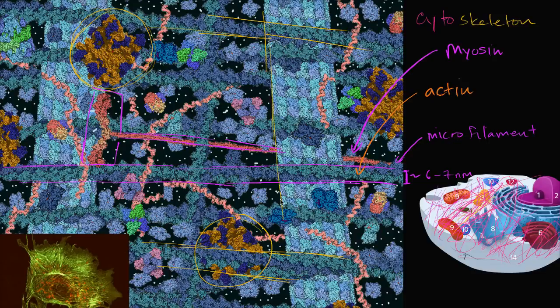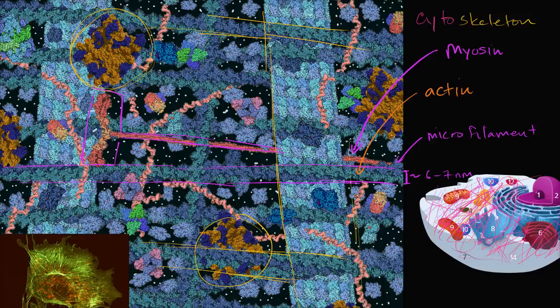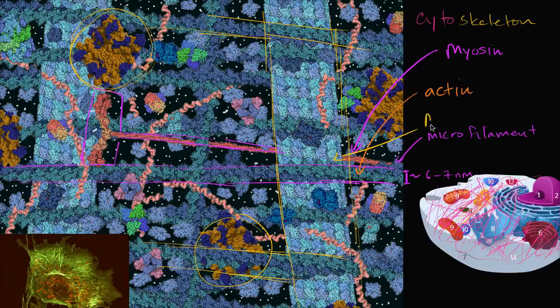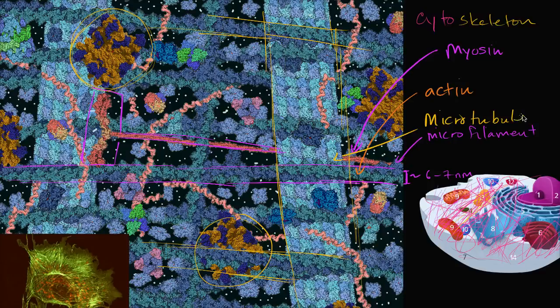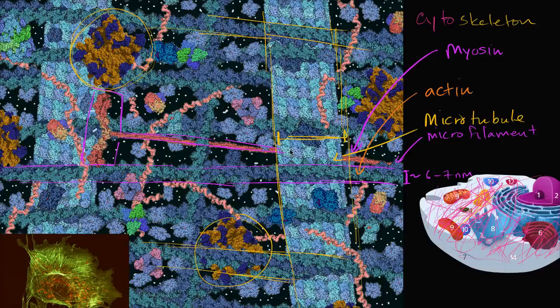So for example, what are these tube-like structures? Well, these are called microtubules. Microtubules. And they look massive compared to the microfilaments. But they're still fairly small on a cellular scale. This is about 25 nanometers.